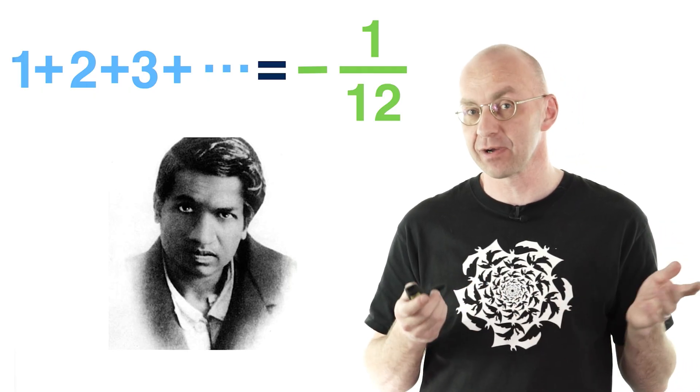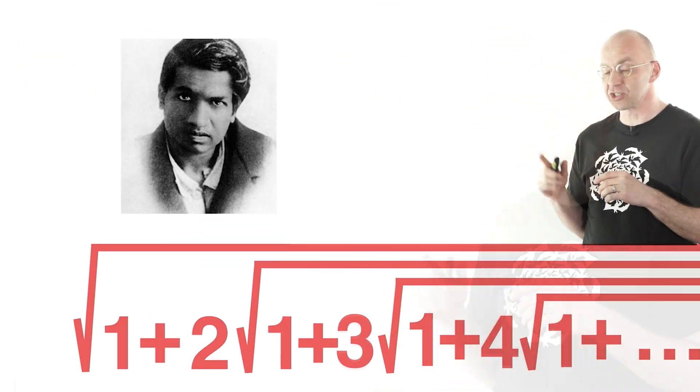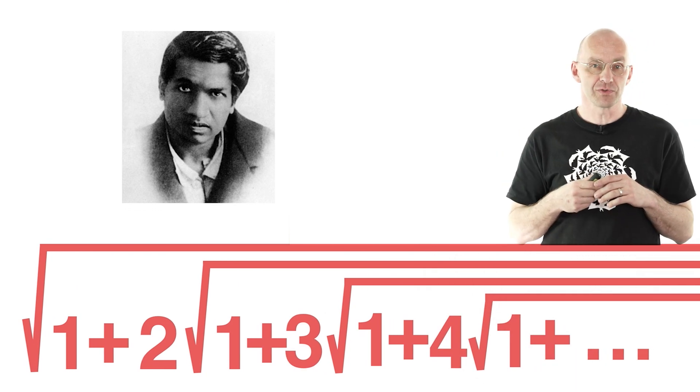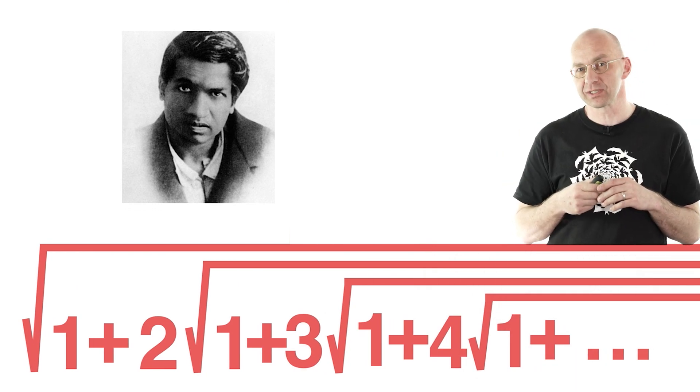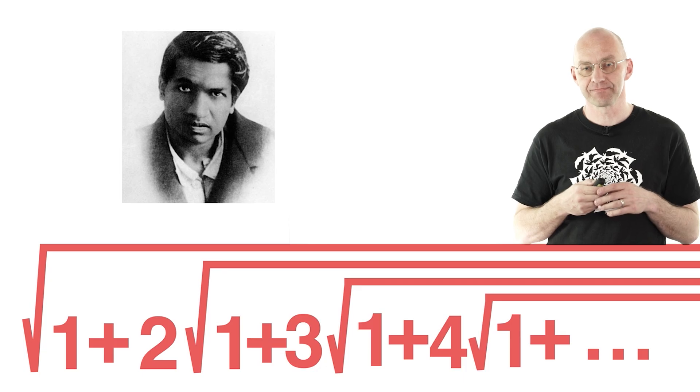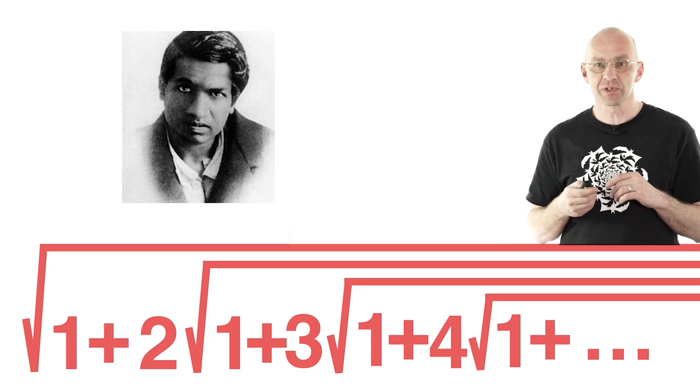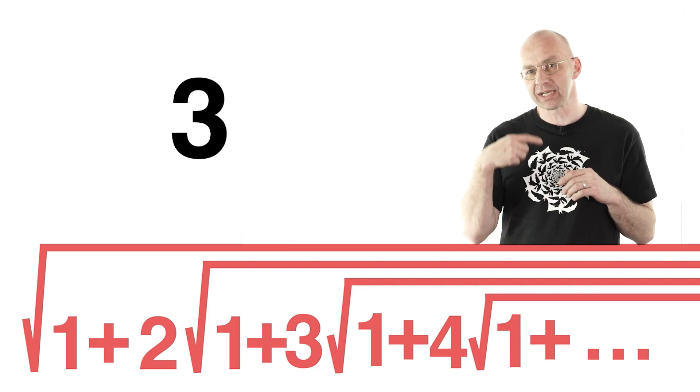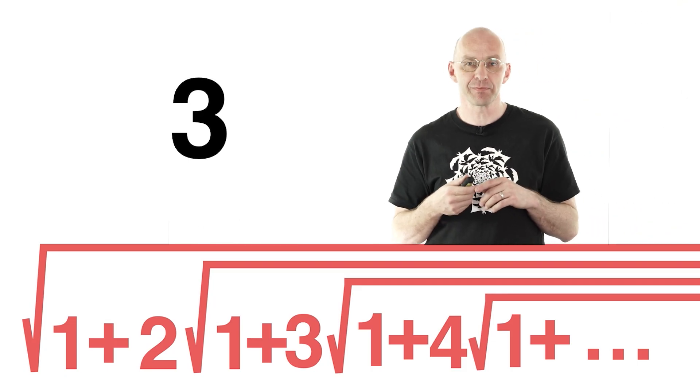Ramanujan is also famous, at least among mathematicians, for this strange infinite 1, 2, 3, 4, 5 expression. It's an infinite nested radical, and he says it's equal to 3. And I can give you his argument, which is very, very pretty.